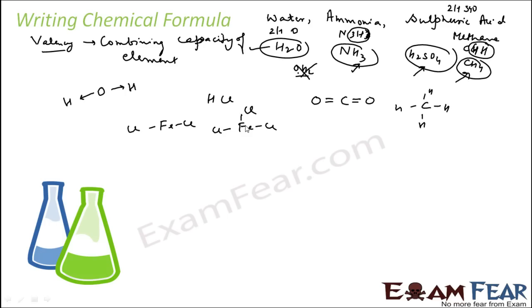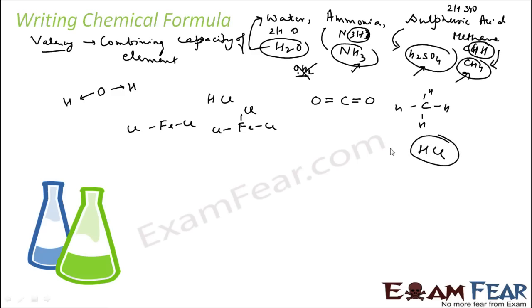In the next chapter we will touch on why iron exists as FeCl2 and FeCl3. A chemical formula is a formula to represent a particular chemical: water as H2O, ammonia as NH3, sulfuric acid as H2SO4, methane as CH4, hydrochloric acid as HCl. It is very useful for writing chemical reactions — for example, C + O2 → CO2.